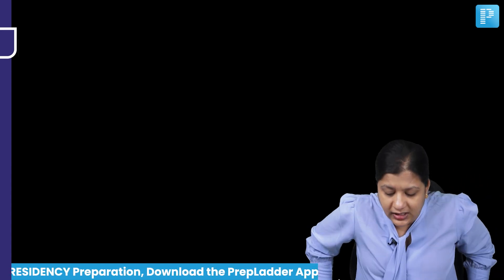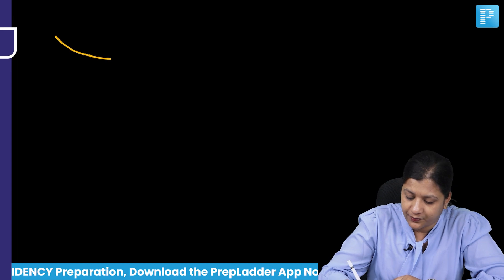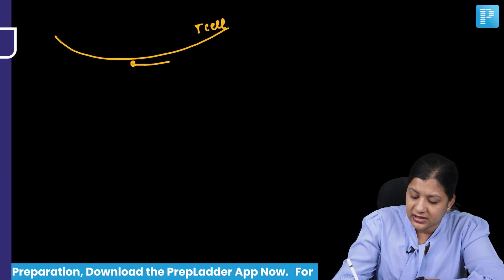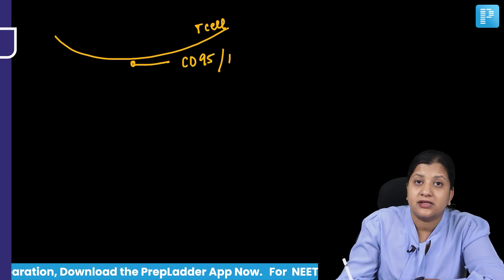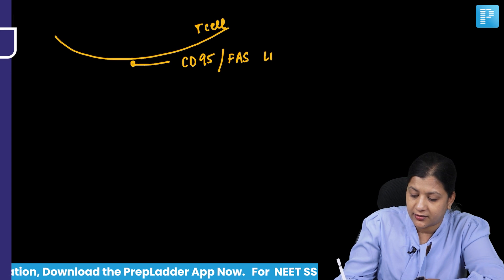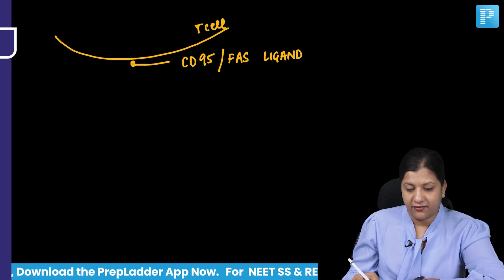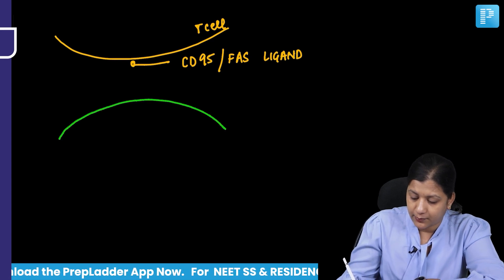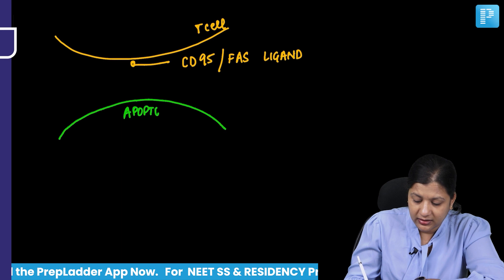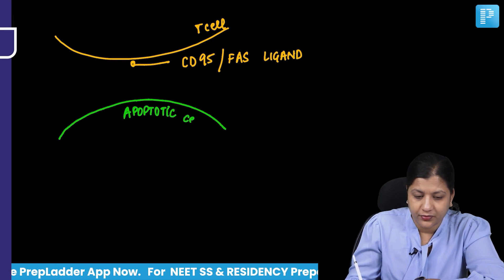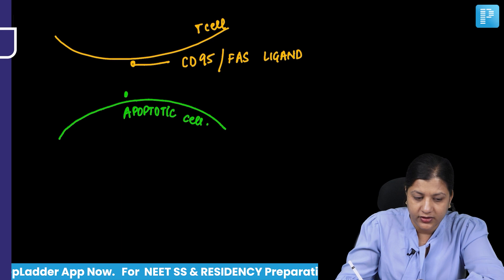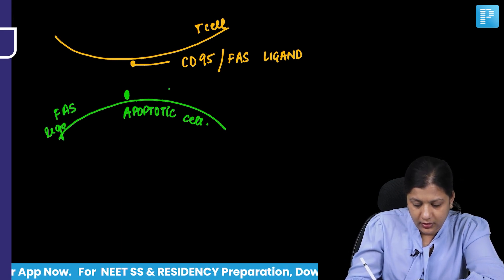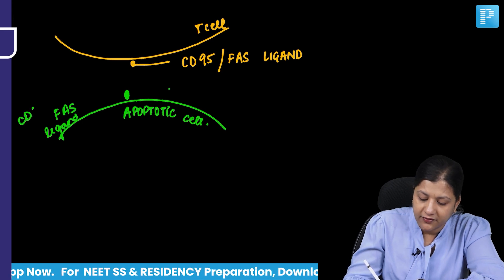Let's take this as your T cell. Your T cell is expressing either CD95 or it is expressing the Fas ligand. Then you have the apoptotic cell — this apoptotic cell will express on it the ligand called Fas ligand, or your CD95 ligand.